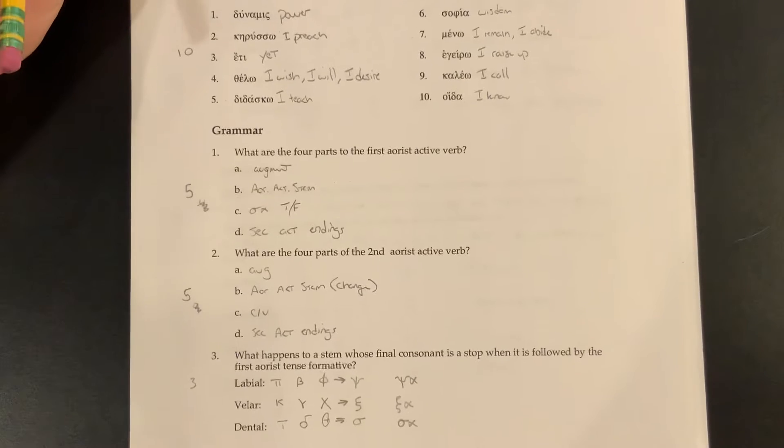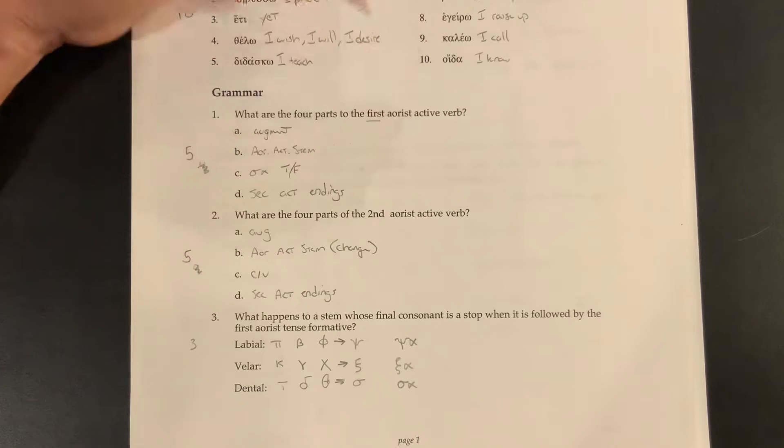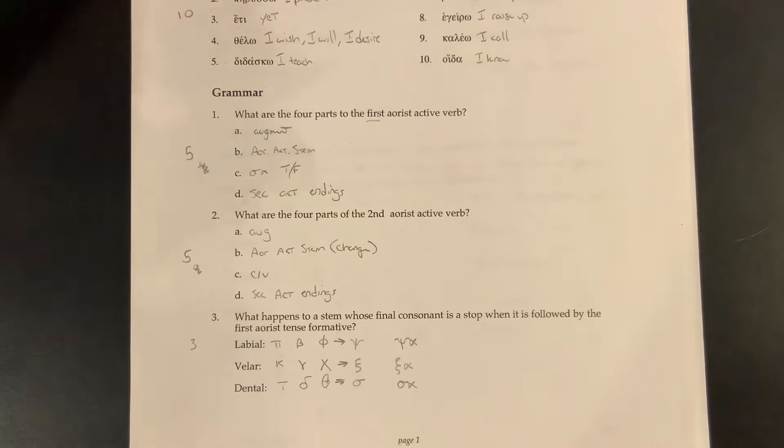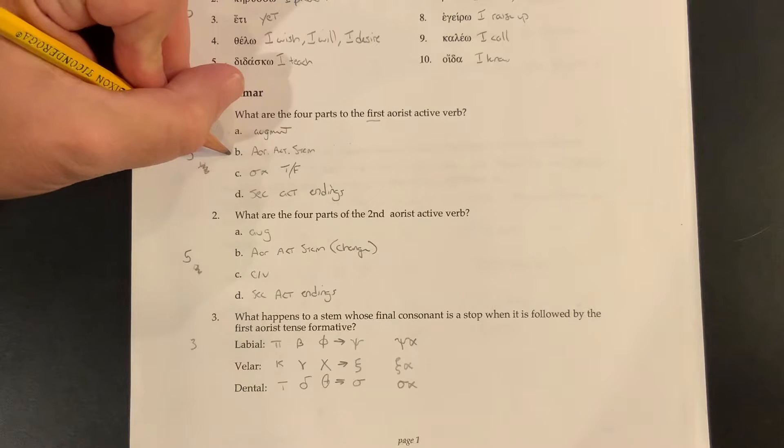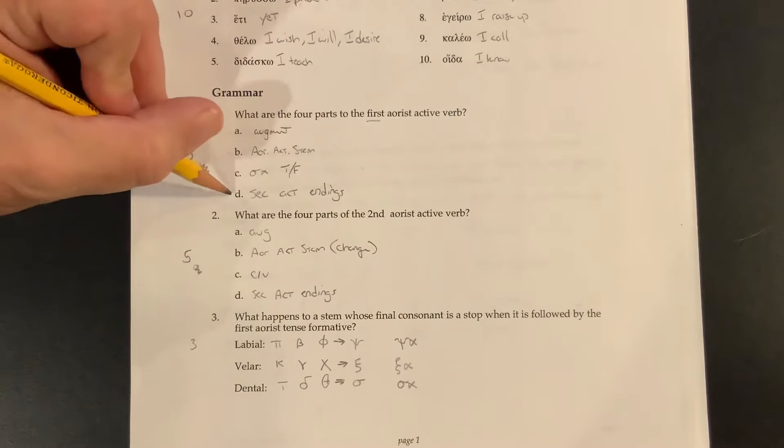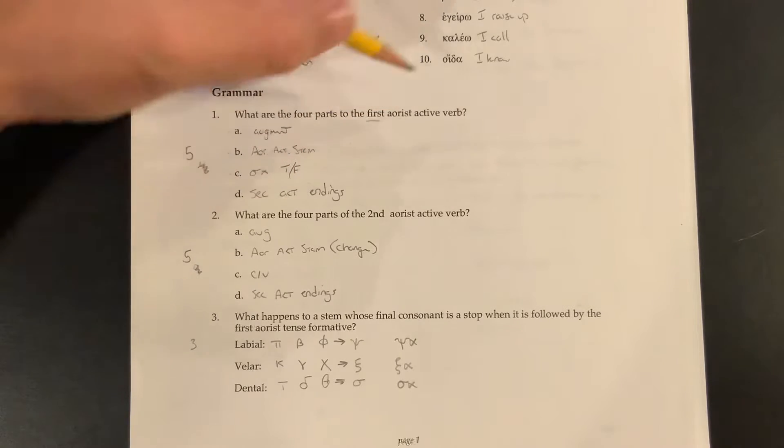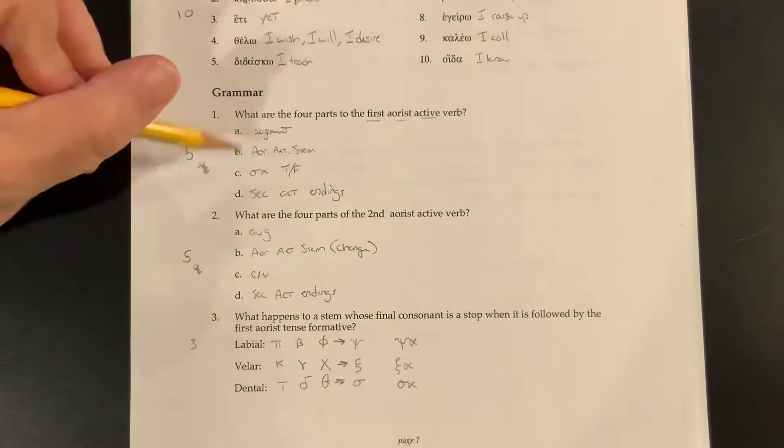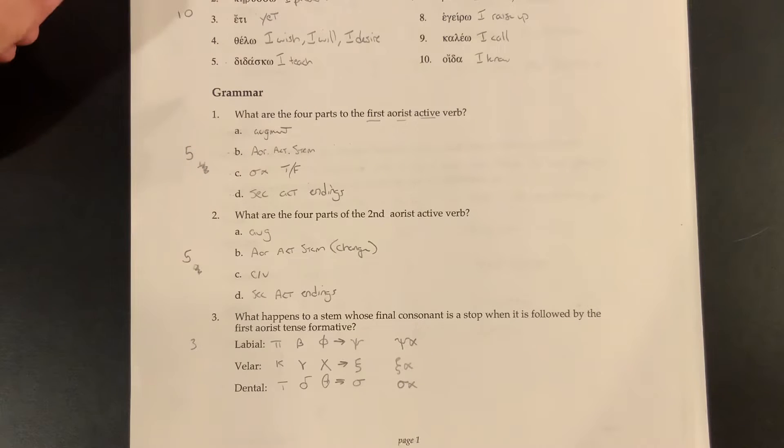What are the four parts of the Aorist active verb? So the first Aorist active verb, Aorist begin with an augment. We get an Aorist active stem and then a sigma alpha tense formative along with secondary active endings. So it's a first Aorist active: augment, Aorist active stem, tense formative, sigma alpha tense formative, and secondary active endings.